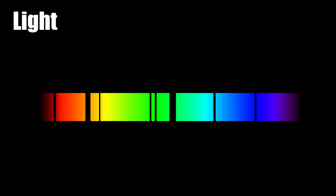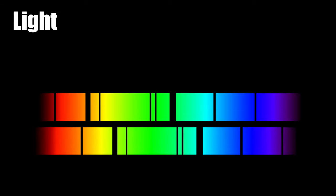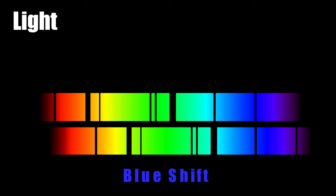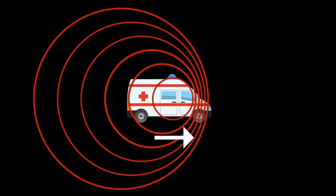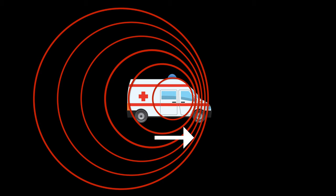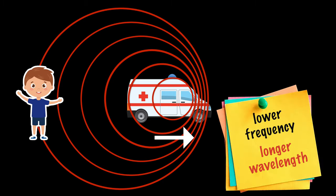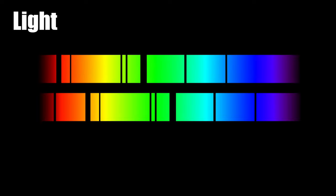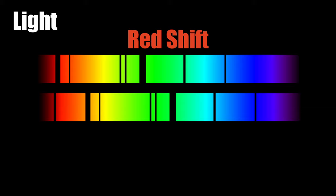For light, when the distance between the observer and the source gets closer, this causes a shift in color towards the blue end of the spectrum, called a blue shift. If the distance gets longer, the frequency is lower and the wavelength is longer, causing a shift towards the red end of the spectrum called a red shift. The faster something is moving away, the greater the red shift.